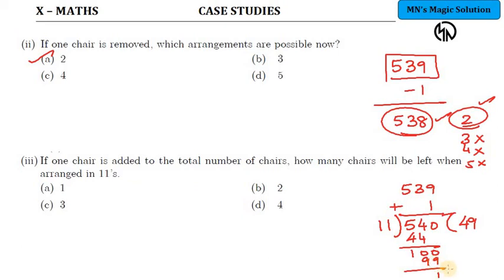If they are arranging it in 11s, the pending number of chairs that they will get will be one chair. The remainder that you get here is the pending number of chairs. The question asks about chairs left out when the particular number is 540. So I am dividing by 11 and finding the remainder. So 1 will be the answer for this third subdivision.